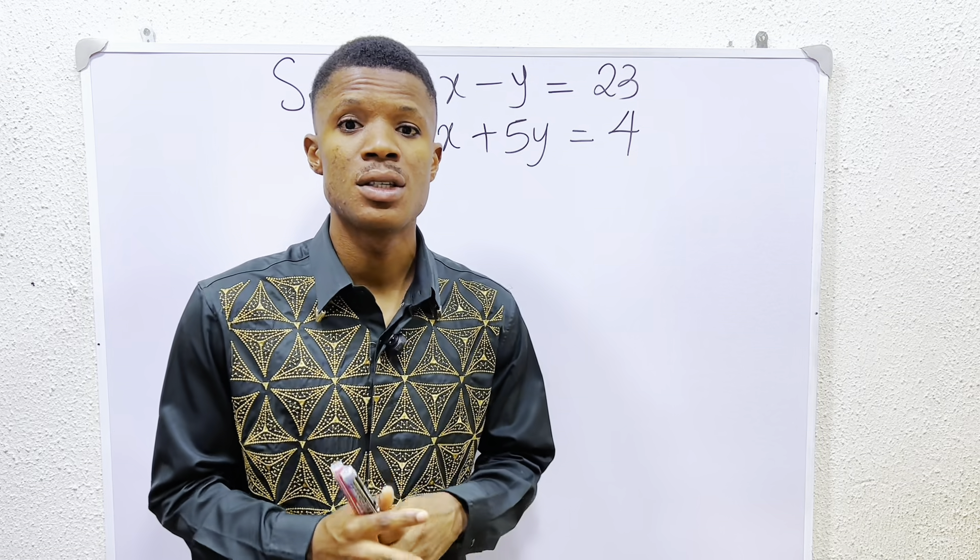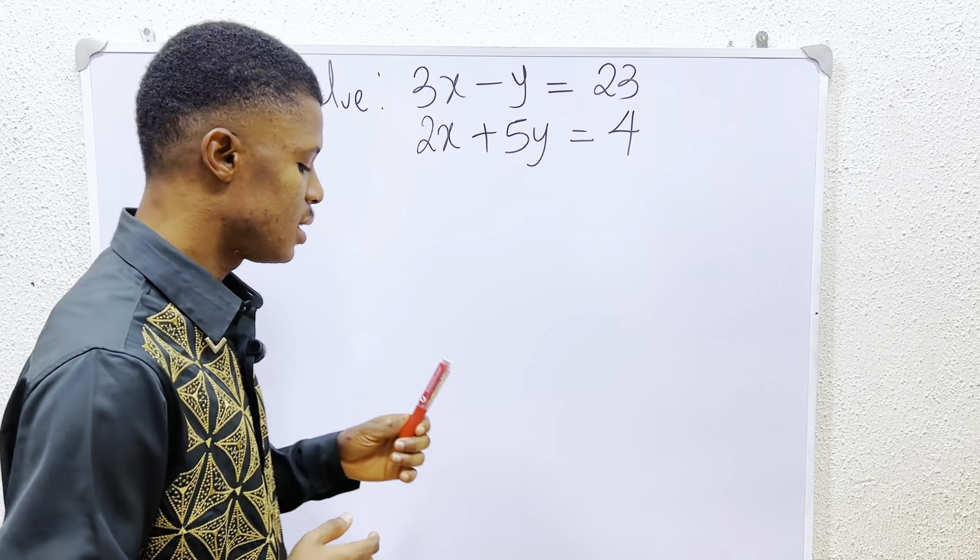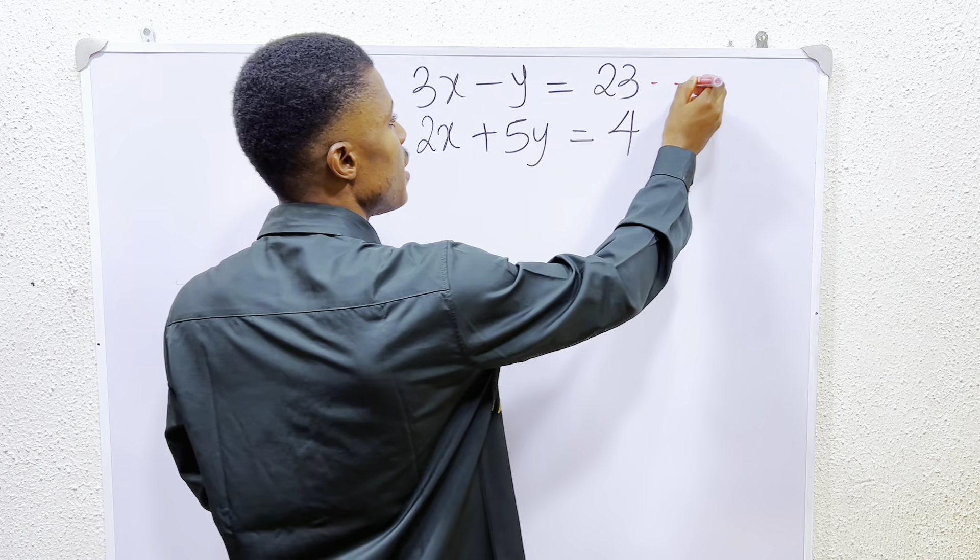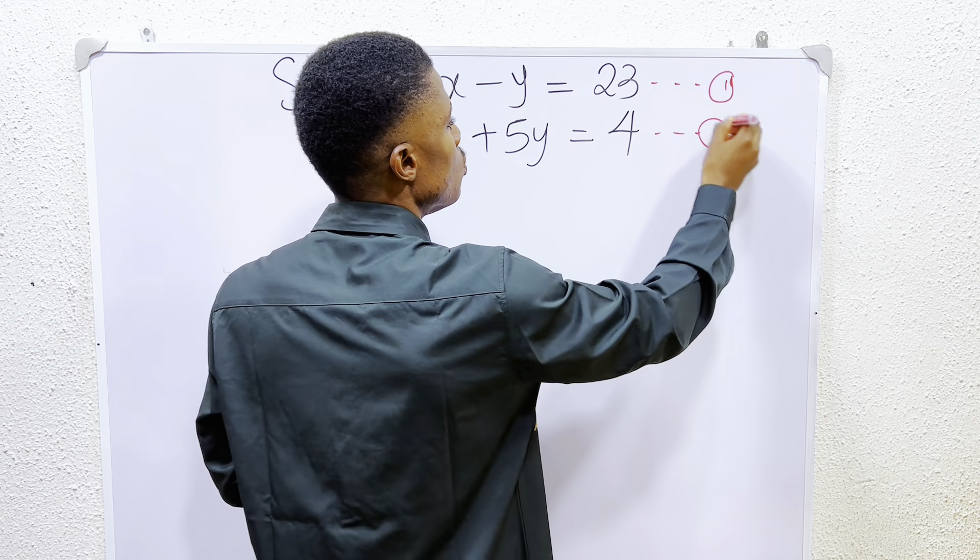Can you solve this simultaneous equation by substitution method? To solve this, this is very simple. First thing we have to do is to label the equation. So the first one becomes equation 1, and the second one becomes equation 2.